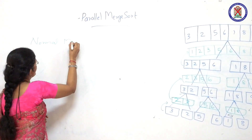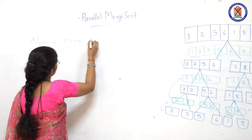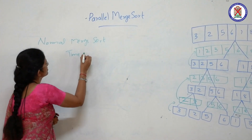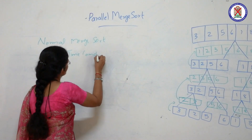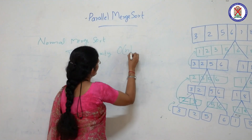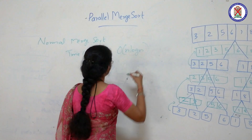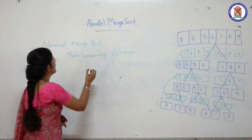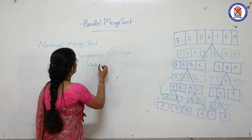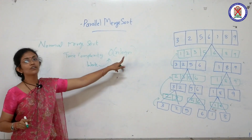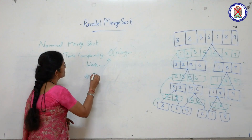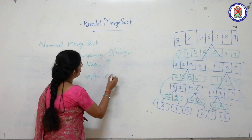This is the normal merge sort. The time complexity is O(n log n). The work complexity is O(n log n). The depth complexity is also O(n log n).